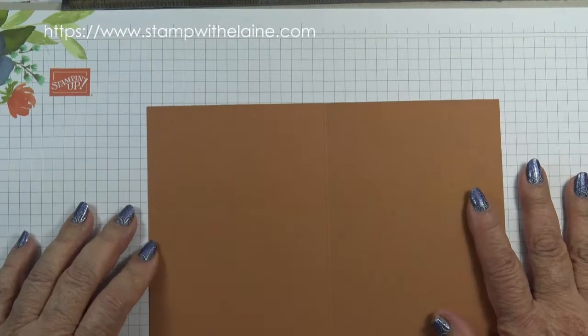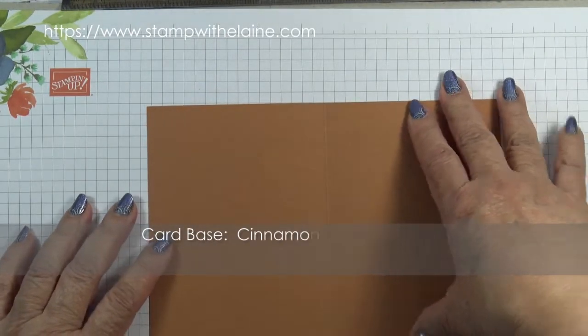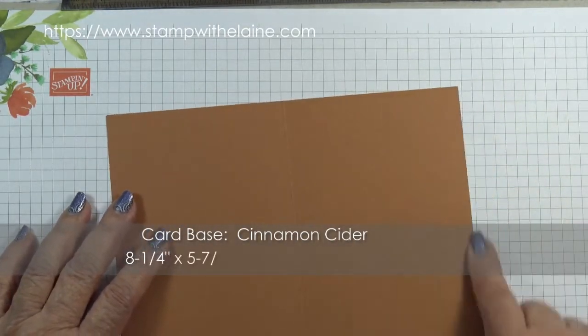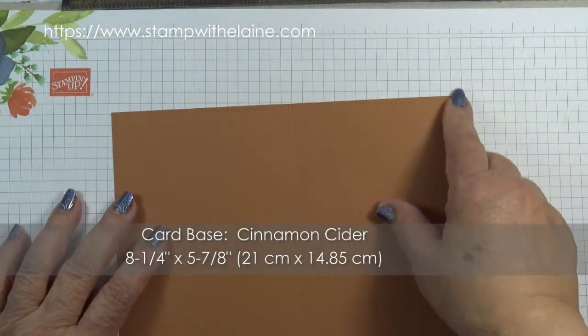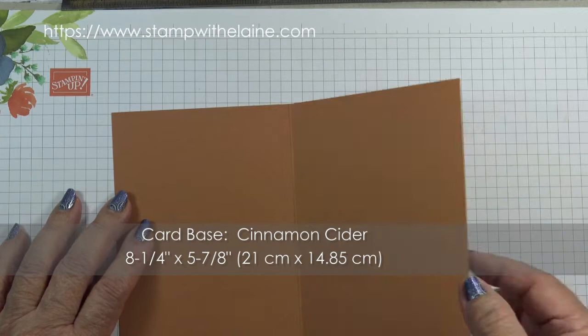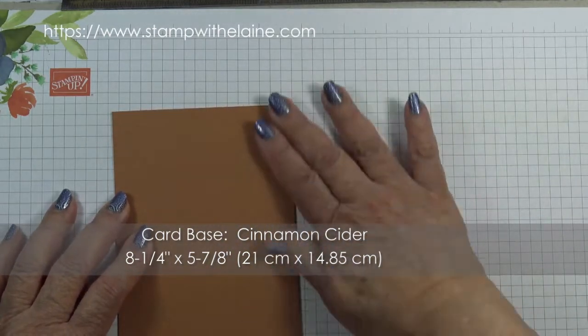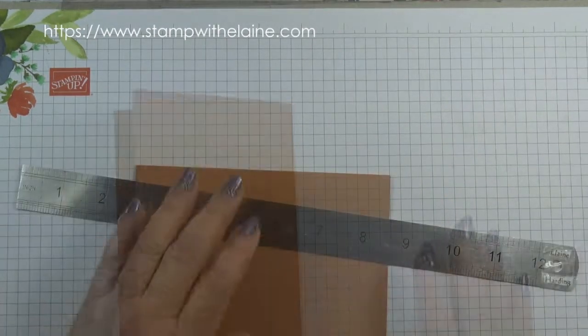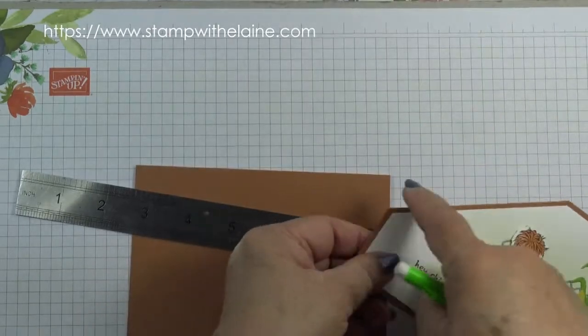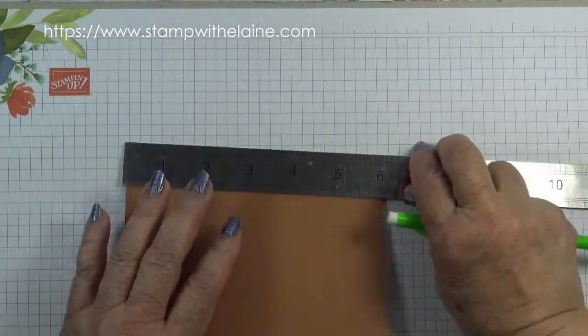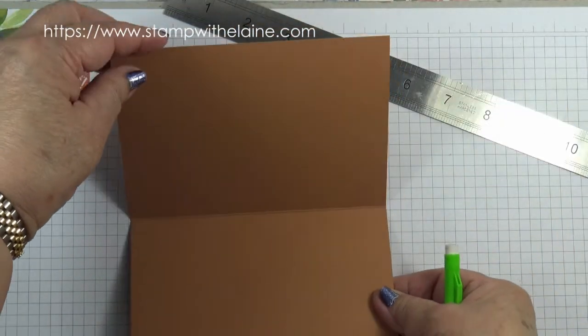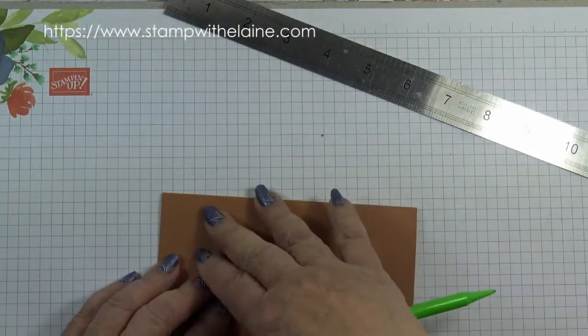To make the card you start off with the card base that's eight and a quarter inches by five and seven eighth inches. In metric that's 21 centimeters by 14.85 and you fold it in half. To create this angle pop-up you have to mark the card. So the card is a landscape with a fold at the top.